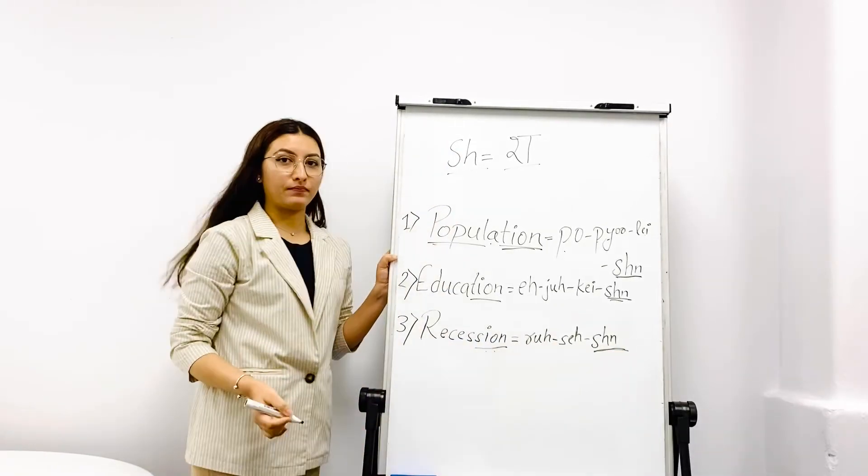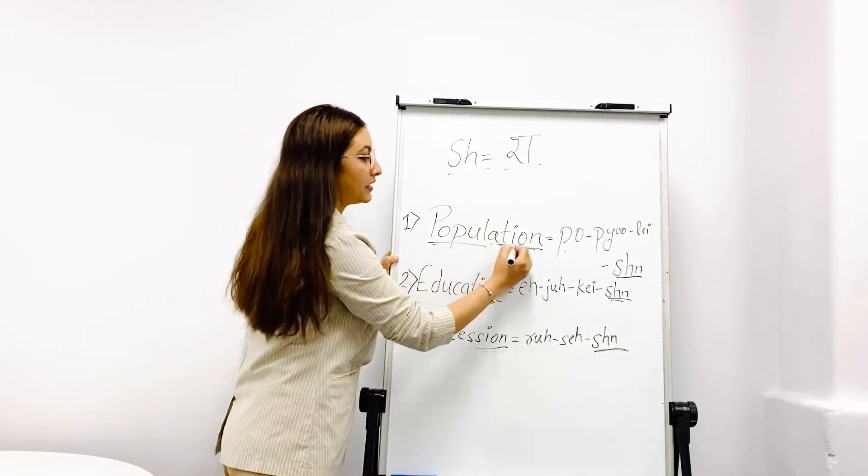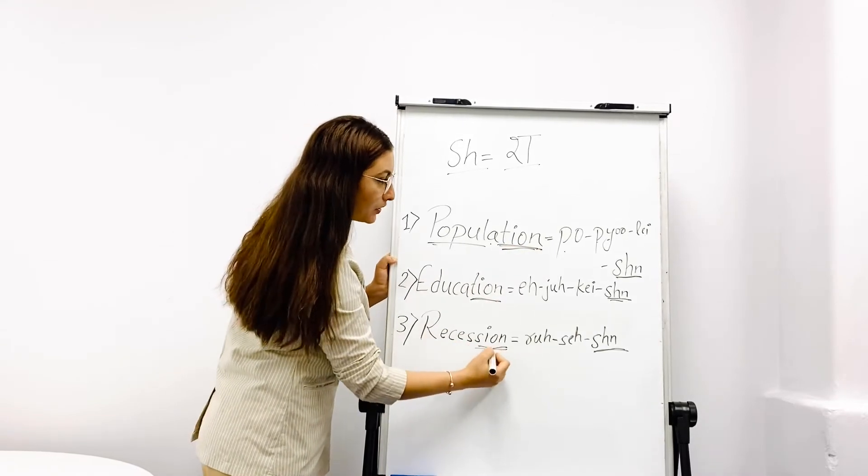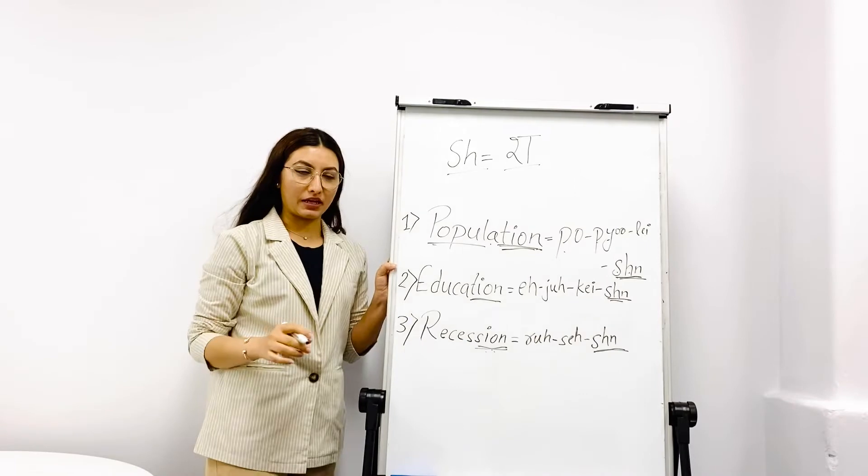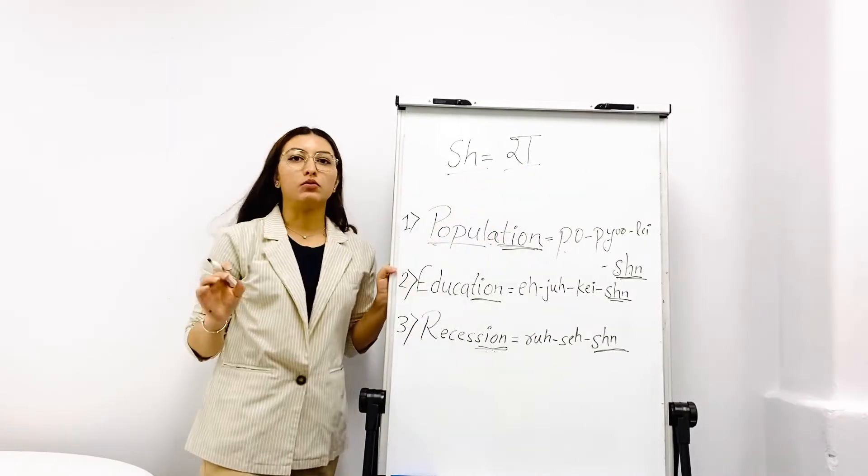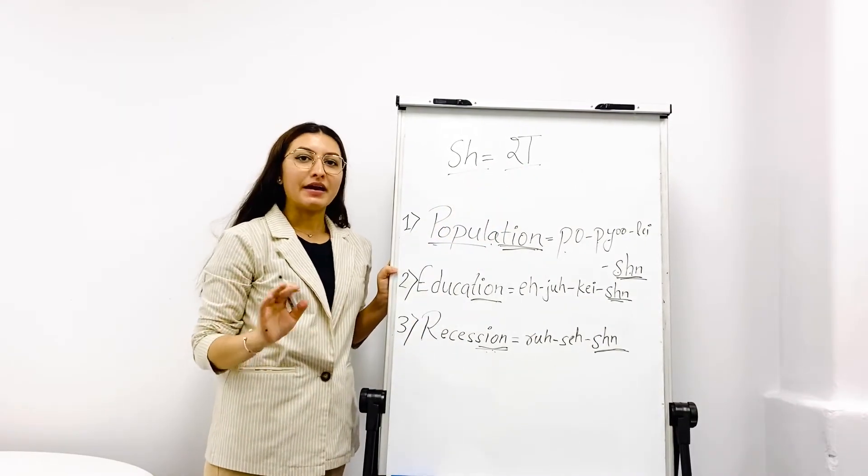Right, so tion and sion endings use the SH sound for better pronunciation, as in population, education, and recession.